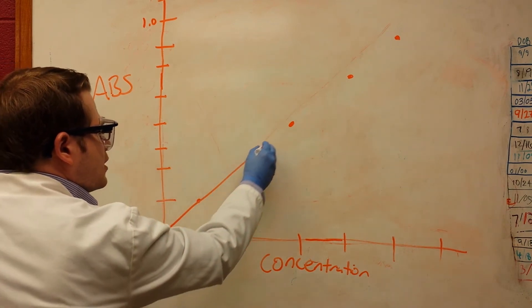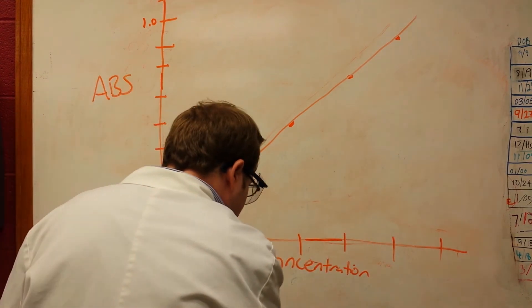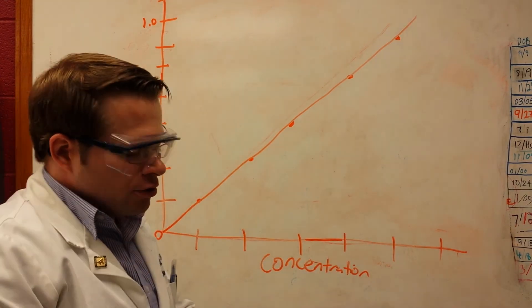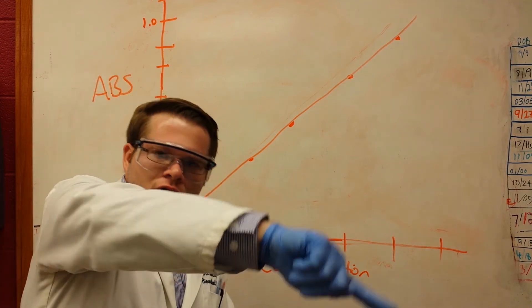So, it'll look something like this. Now, whenever you do this by hand on your report, you want to get another sheet of paper out, and just hold it so you have a straight edge, and you can just draw right along it.